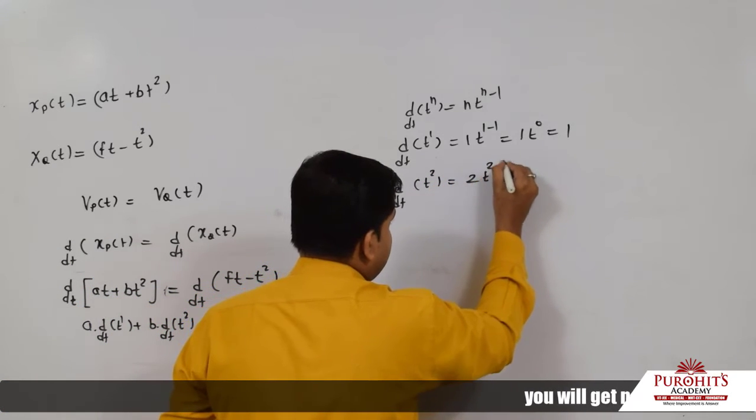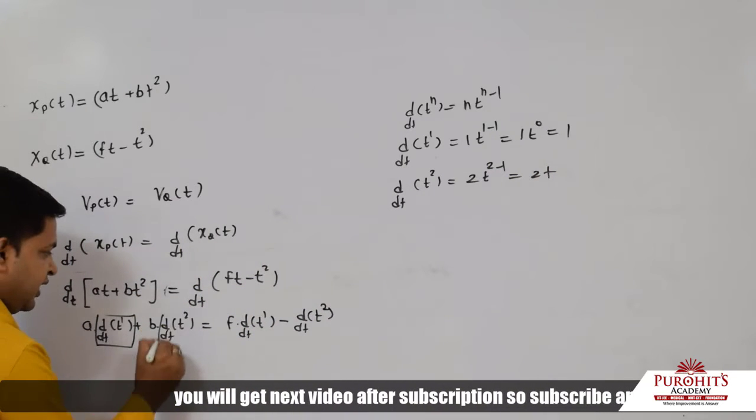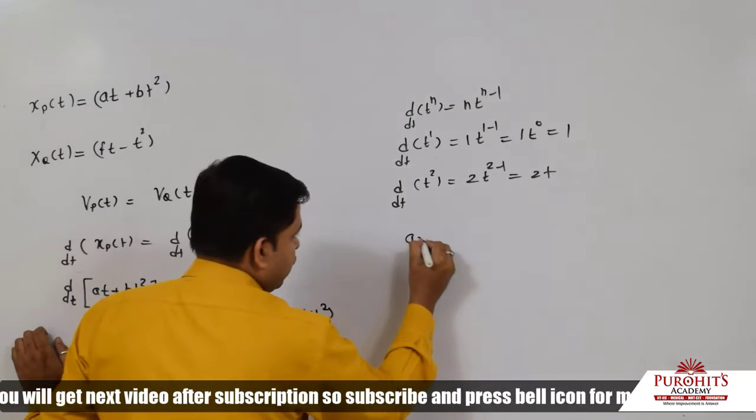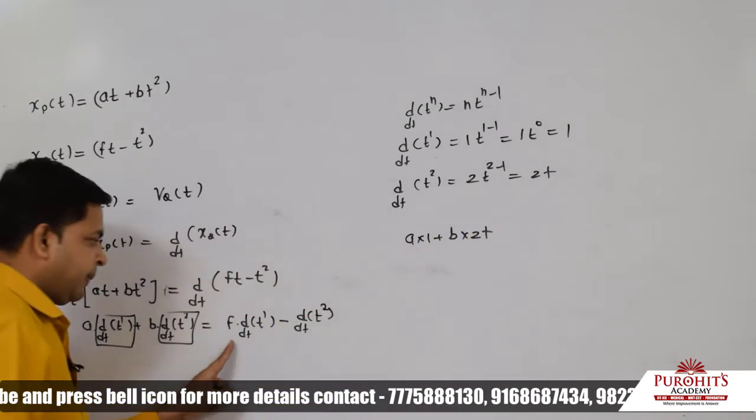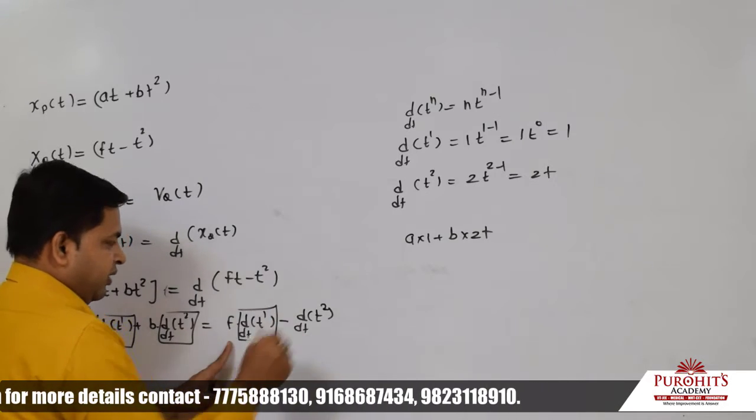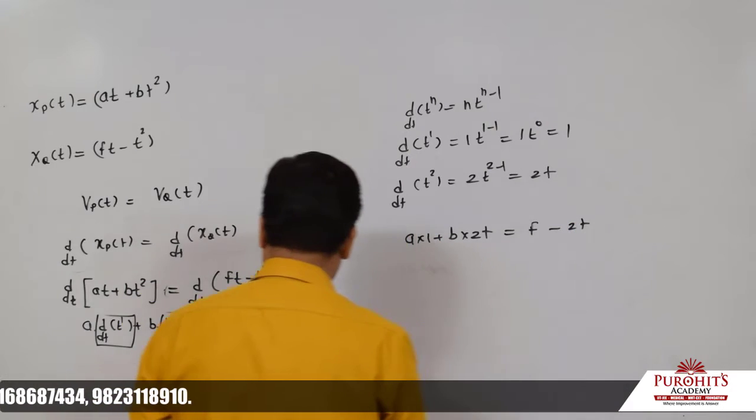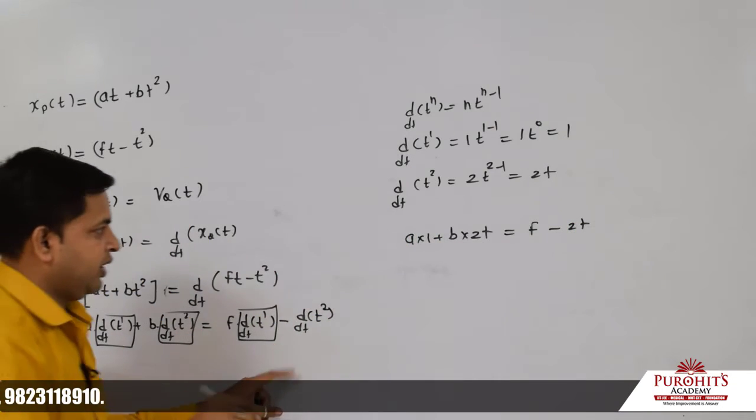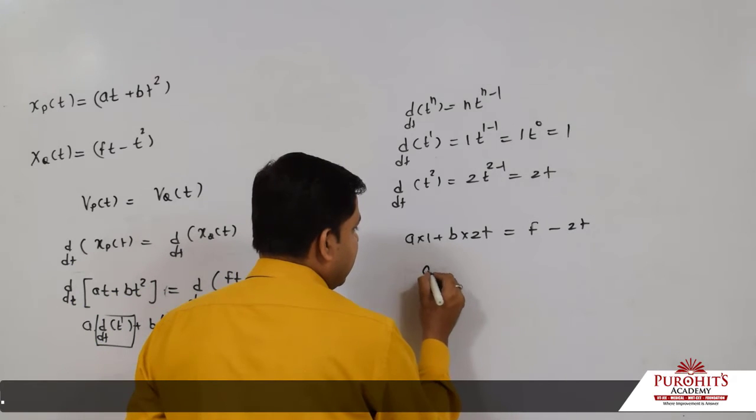After differentiation, we have a + 2bt on one side and f - 2t on the other. We need to find the value of t, so we'll rearrange the equation to solve for t.